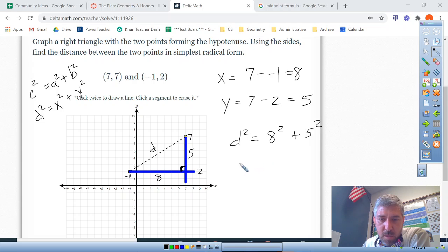d squared equals x, which is eight squared, and y, which is five squared. So d squared is 64 plus 25, and that's 89.